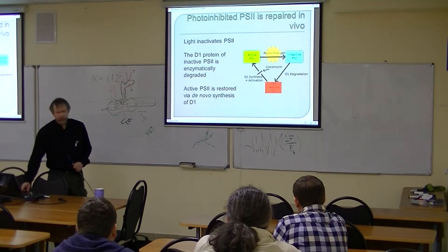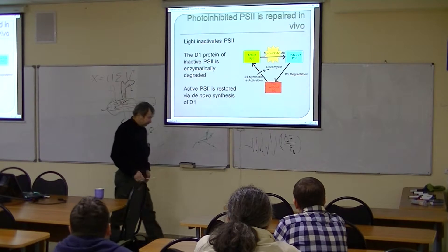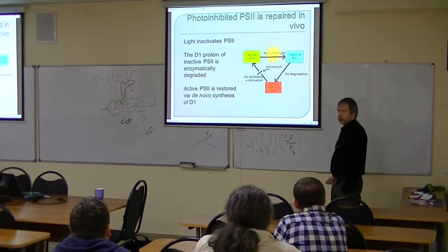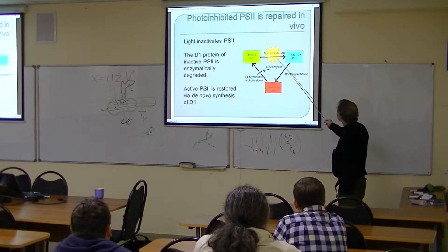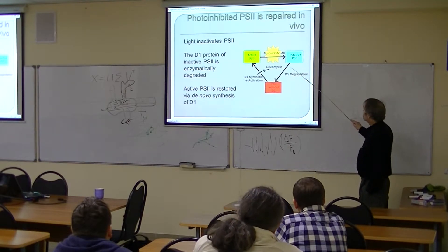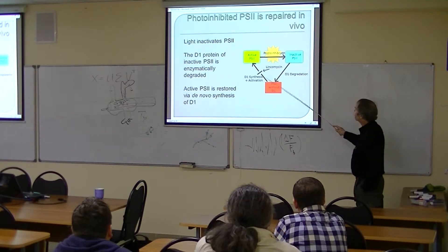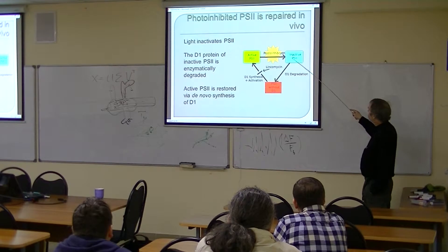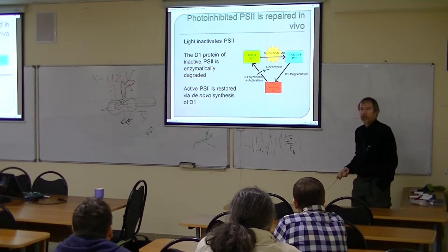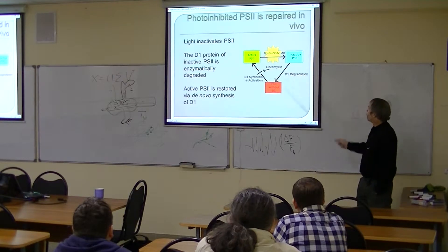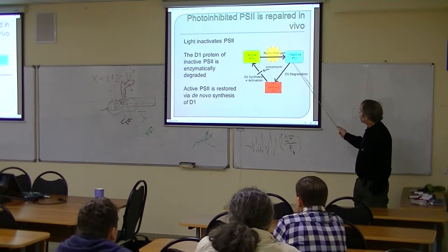It is well known that light can inactivate photosystem 2 — I call this photo-inhibition. When we go from active photosystem 2 in the light to an inactive state, that is photo-inhibition. The recovery process starts with degradation of the D1 protein, which must then also be synthesized. To study this process without the interference of simultaneous recovery, we have to use an antibiotic — lincomycin — which stops synthesis of the D1 protein, so we can look at the loss of active photosystem 2 without recovery.